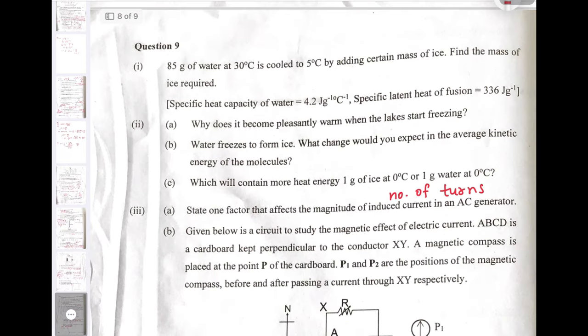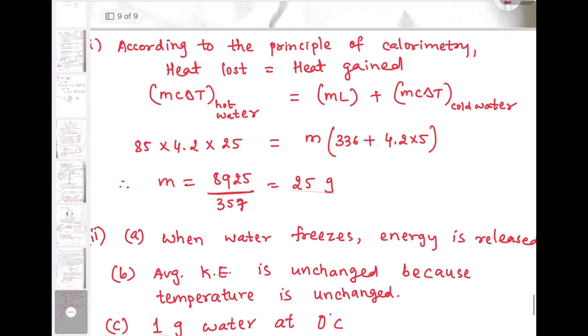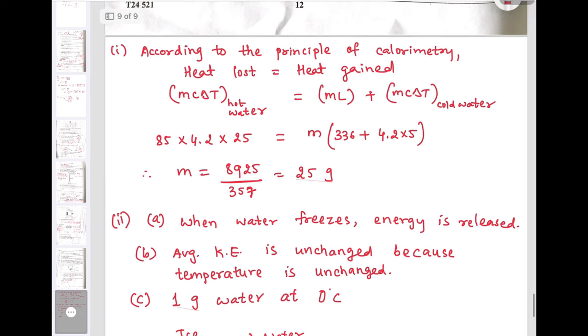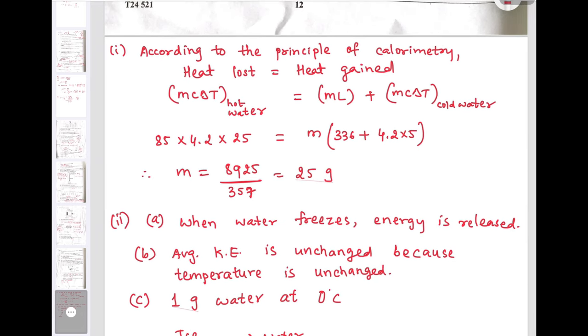Question number 9: 85 gram of water at 30 degree Celsius is cooled to 5 degree Celsius by adding certain mass of ice. Find the mass of ice required. Here water which is at 30 degree Celsius loses heat energy and ice which is at 0 degree Celsius will absorb the heat energy. First ice will convert into water and then the temperature of that water will increase up to 5 degree Celsius. According to the principle of calorimetry, heat loss equals heat gain. MC delta T of hot water equals ml plus MC delta T of cold water. By inserting the values we get mass of ice is 25 gram.